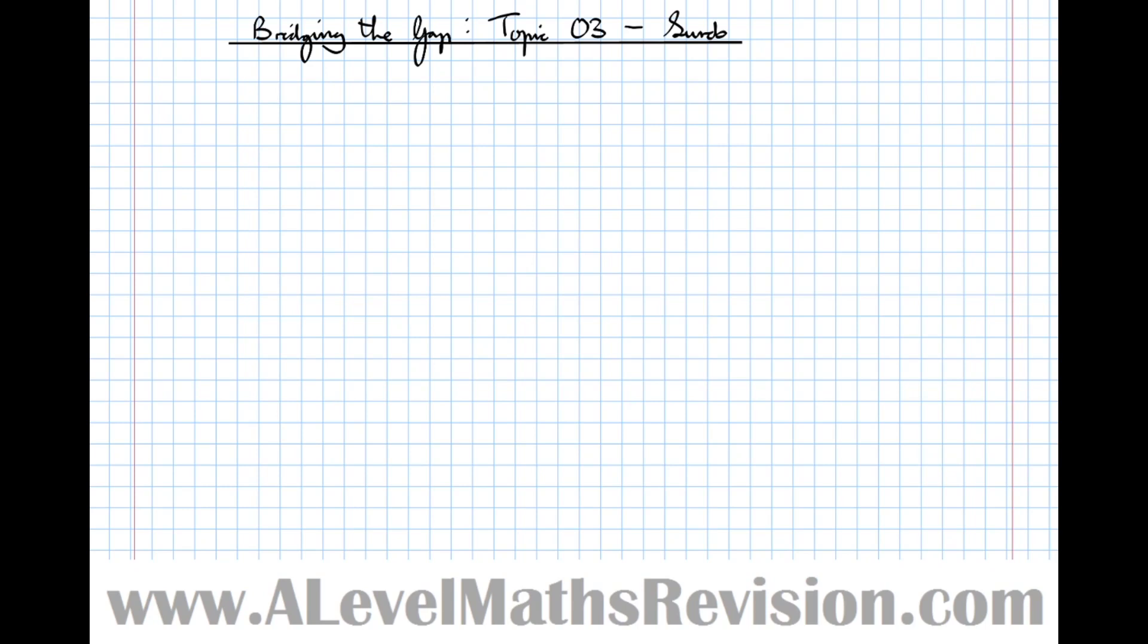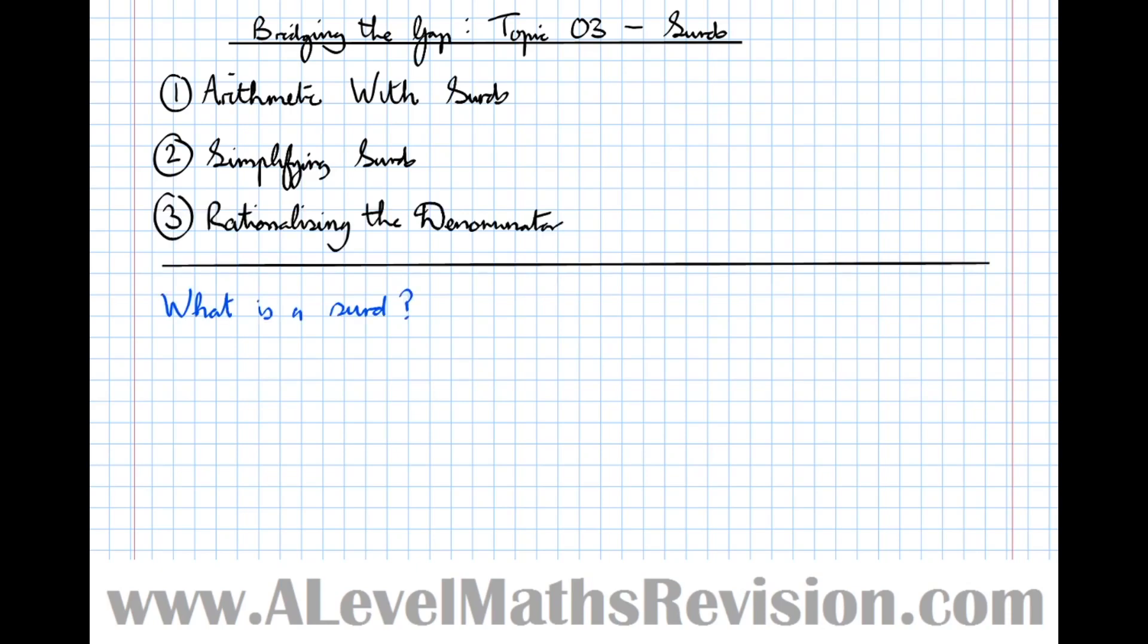So we're going to go on to the third tutorial on bridging the gap between GCSE and A-level maths, and topic three is going to be on surds. Now there's three different sub-topics that we're going to do today. Topic one, arithmetic with surds. Topic two, simplifying surds. And topic three, rationalising the denominator. Before we go through that though, let's look at what a surd actually is.